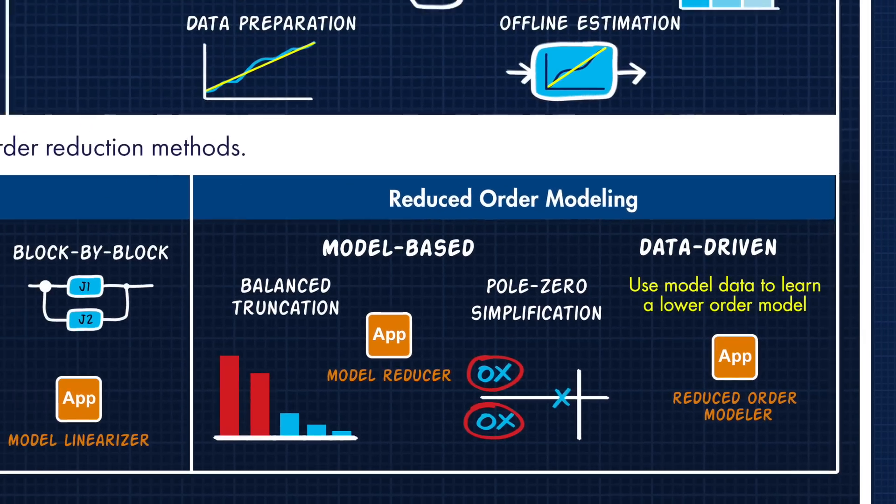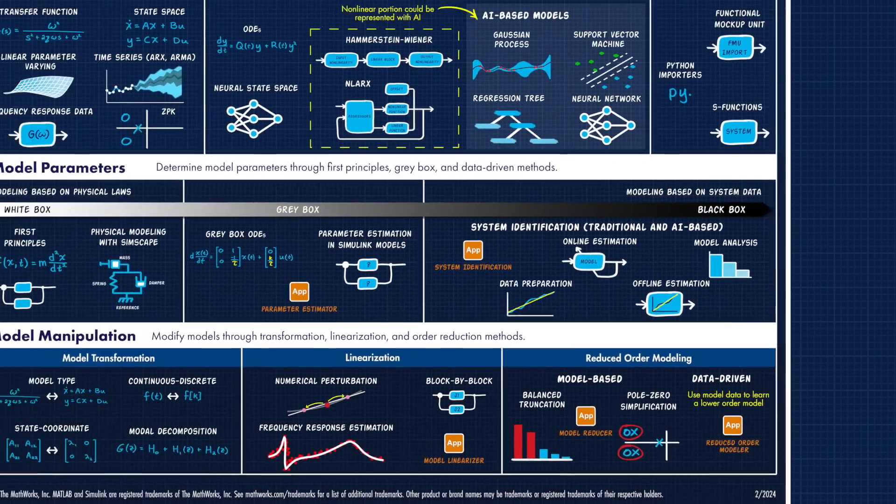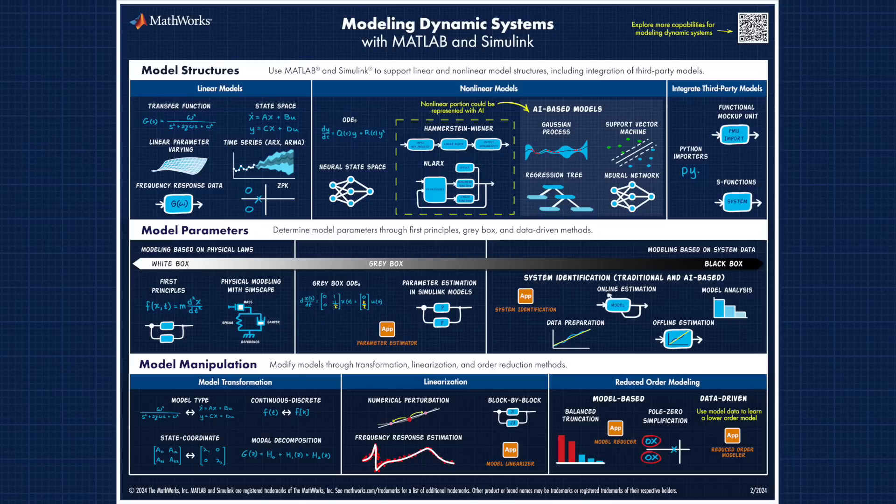So that's an overview of the map of modeling dynamic systems. The key takeaways here are that it's good to have options and tools for creating models because there isn't one perfect approach. It depends on the system that you're trying to model, and the knowledge and data that you have about that system. Plus, it's important to know that modeling complex systems could use a combination of these tools.